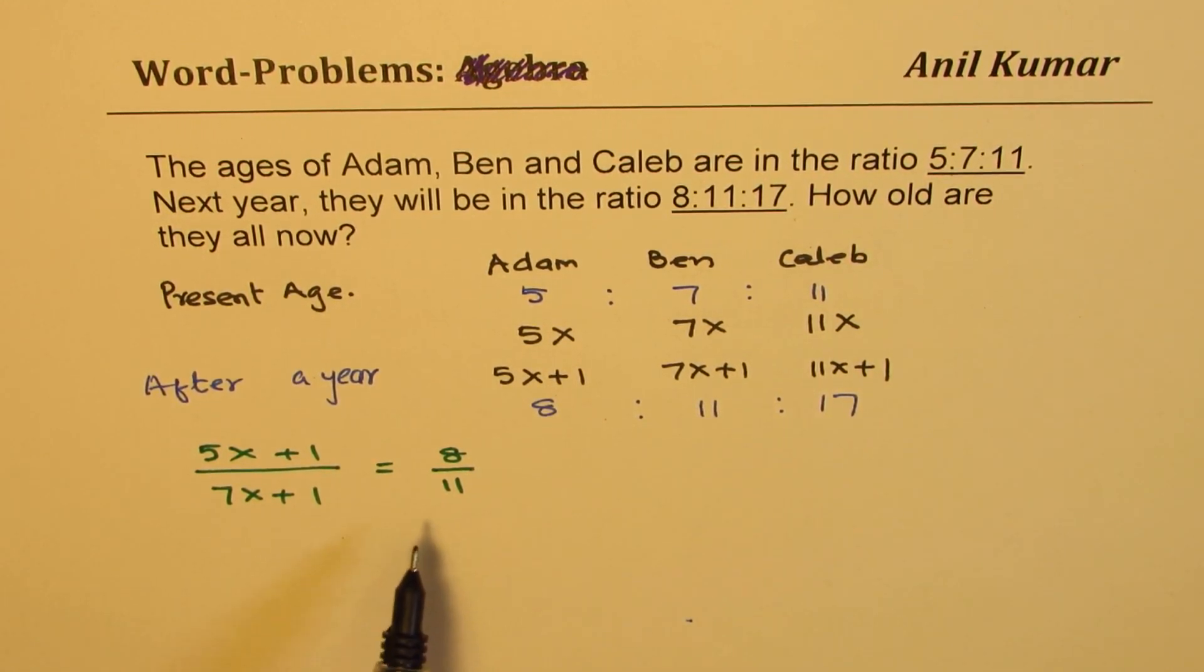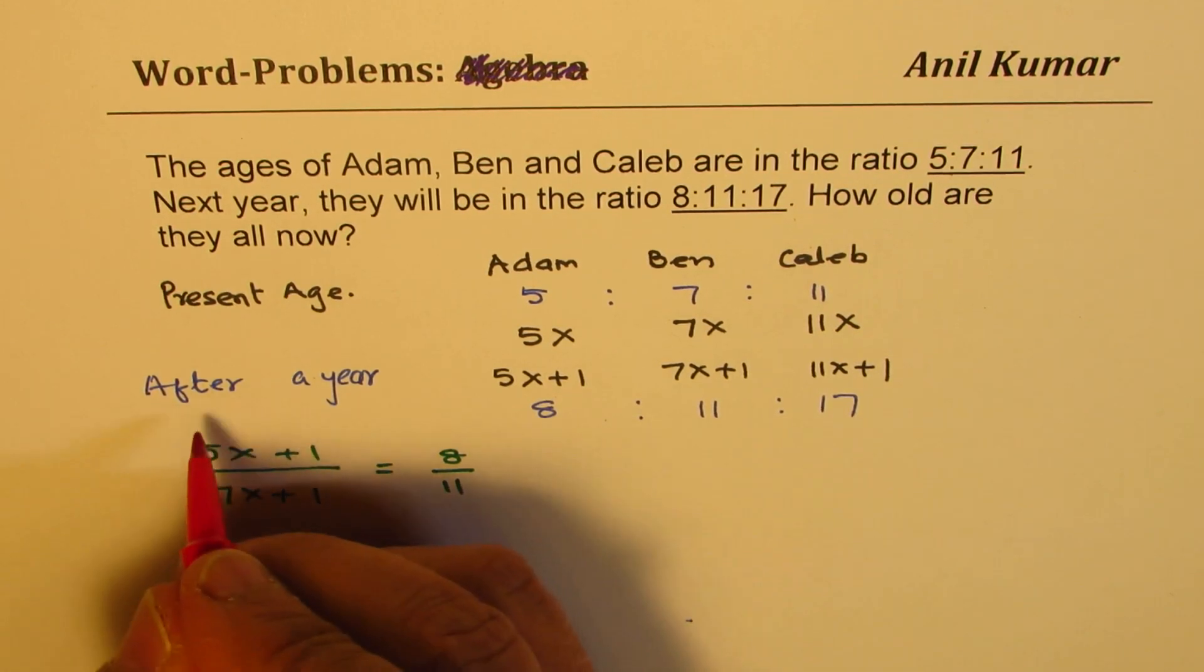Now once we write it like this, it is some equation in terms of x and there is one equation, so it can be solved. We will cross multiply and then solve this particular equation.